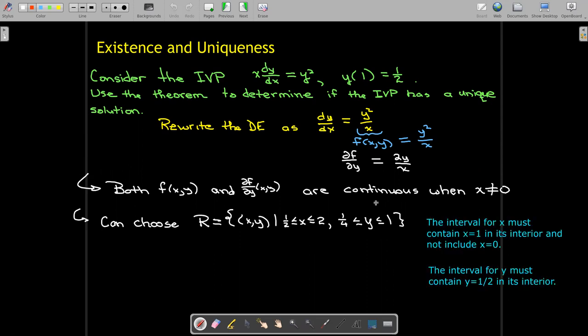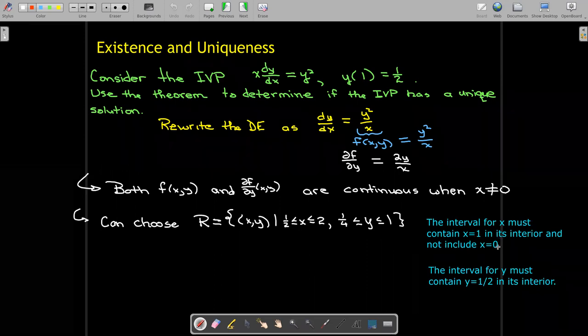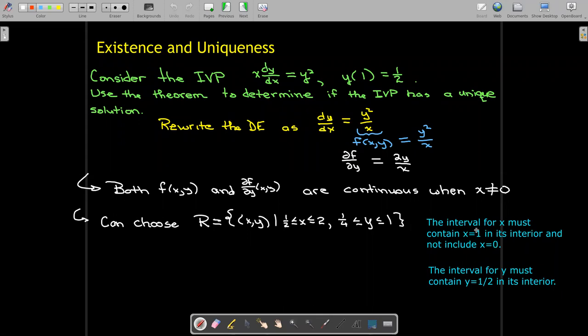1/2. So again, the interval for x must contain x in its interior—it can't be one of the endpoints—and it can't include x equals zero because the functions are not even defined when x equals zero, and certainly not continuous. The interval for y just must contain y equals 1/2.